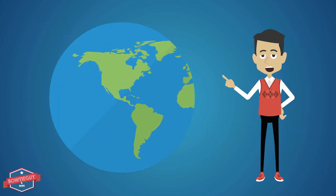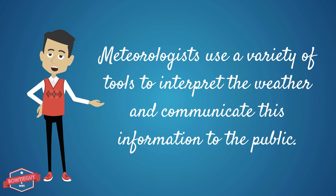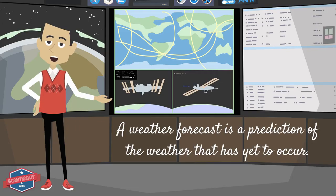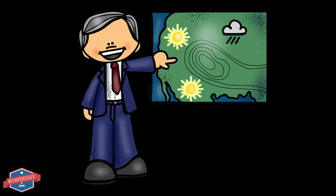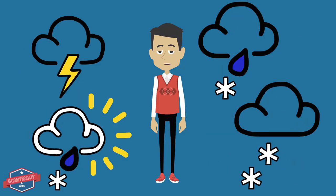Since weather all over the Earth is different from one location to the next, meteorologists use a variety of tools to interpret that information and they communicate it to the public. A weather forecast is a statement or a prediction of the weather that has yet to occur. If you ever watch the news, you can see that they sometimes use special correspondents who are on location who can communicate the weather as it's occurring in a specific location. Meteorologists use a variety of symbols to indicate the weather that has yet to occur.